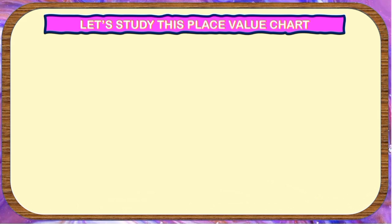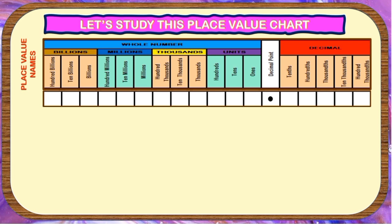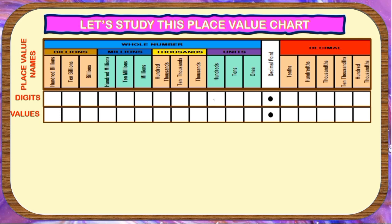Let's study this place value chart. This part here corresponds to the place value names of both the whole number and decimal number. This portion is allotted for the digits, and this for the values. Let us put the digits 1, 2, 3 at the left side of the decimal point, while the digits 5, 6, 8, and 9 to the right side of the decimal point. Let's find out the place value and the value of each digit, starting with the digit 1.